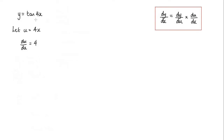Substituting u into this original equation here, I would get that y is equal to tan of u. And therefore, dy by du is equal to sec squared u.